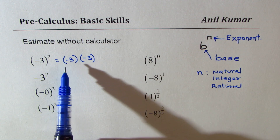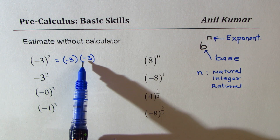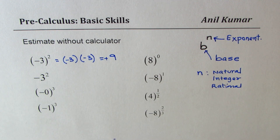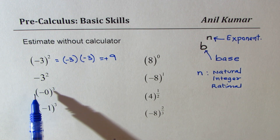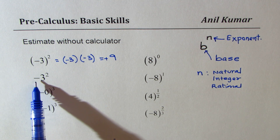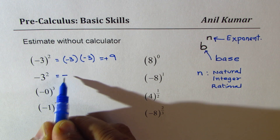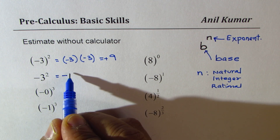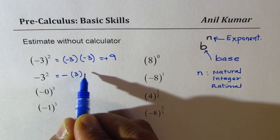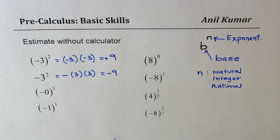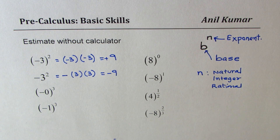When you do so, minus times minus becomes positive and 3 times 3 becomes 9, so you get positive 9. In the second case, when I say minus 3 square, the minus is not squared. So in this case, 3 is multiplied by itself but the minus remains, and we get minus 9 as a result. That is a very important conclusion — I hope that clears confusion for many students.